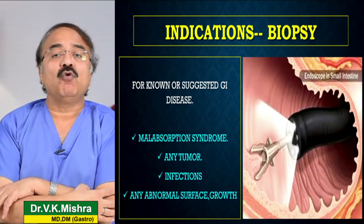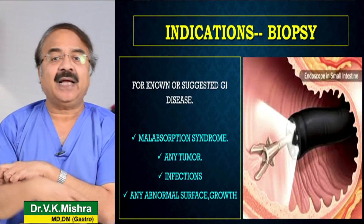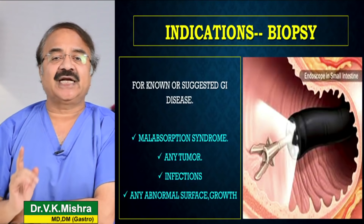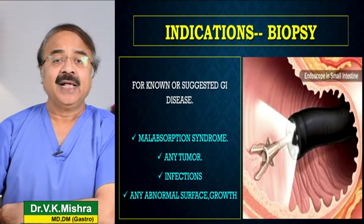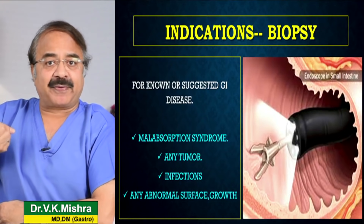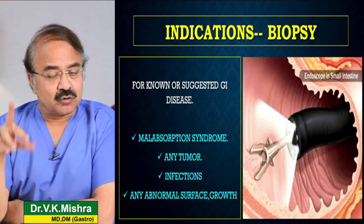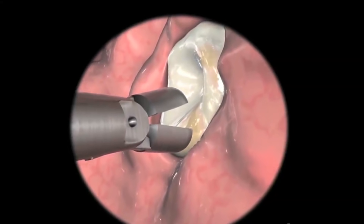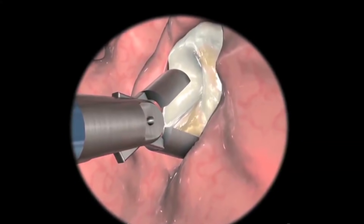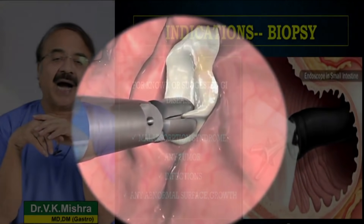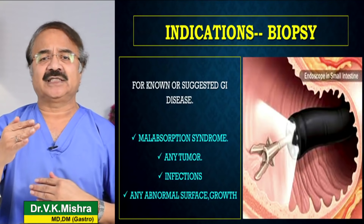कभी upper GI endoscopy आपको indicated हो जाती है अगर आपको बायोप्सी की जरूरत है। अगर आपको chronic diarrhea है, weight loss हो रहा है, और investigation कहती है कि आपको malabsorption syndrome है — यानी intestine खाने का absorption properly नहीं कर पा रही — तो duodenum से biopsy कराने की जरूरत है। अगर खाने की थेली में कोई tumor suspected है, या helicobacter pylori या tubercular infection develop हो रहे हैं, तो भी biopsy की जरूरत पड़ती है।